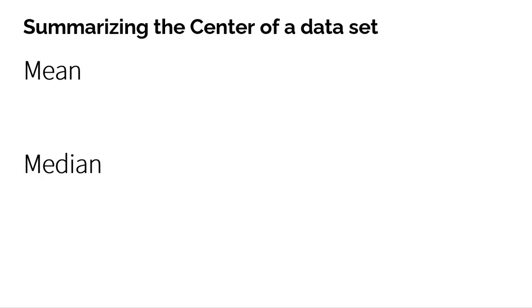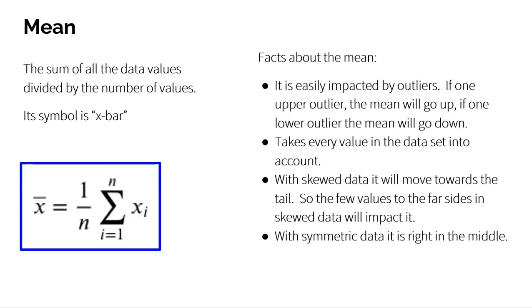Here are the two ways that we can measure the center of our data, and they should both be pretty familiar to you: the mean — maybe you're more familiar with hearing the word average, but in pure statistics we call that the mean — and the median as well. The mean, describing it in words, is the sum of all your data values divided by the number of values. How do you find an average? You add up all your values together and divide by how many you have.